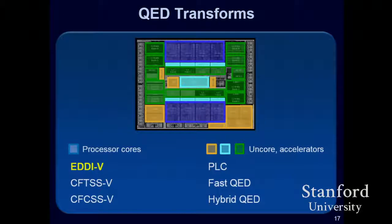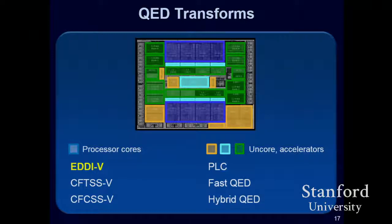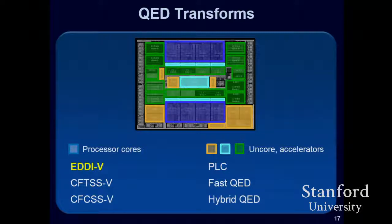An SOC contains a whole bunch of components — processor cores, uncore components like cache controllers and memory controllers, and accelerators. Depending on what part of the SOC you are targeting — and we target the entire SOC — there are different kinds of QED transformations for different parts. I'll focus on two: one targeting the processor core, called the EDDIV transformation, and another called the PLC transformation that targets uncore components.